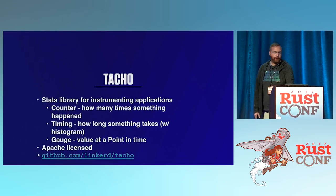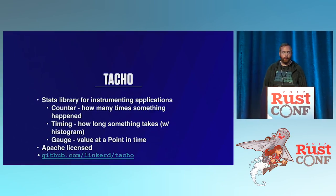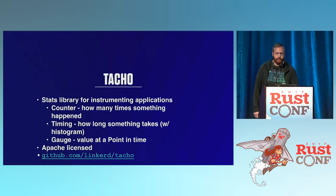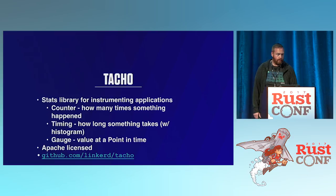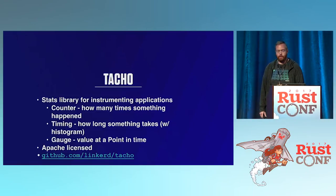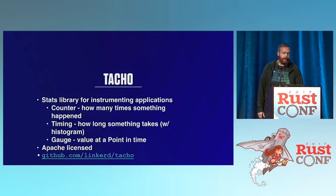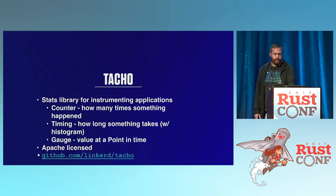One of the things we've built to enable Linkerd TCP is something called Taco, a stats library that lets you instrument your applications. As a stats library it has some basic features: a counter for how many times something happens, timings for how long something takes to run, and gauges which are values at a point in time. This is also Apache licensed.